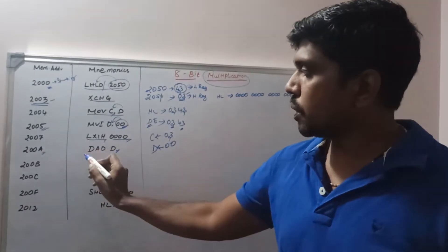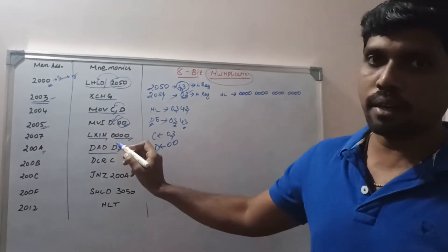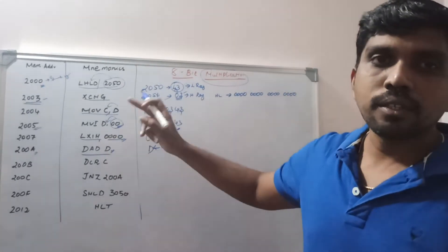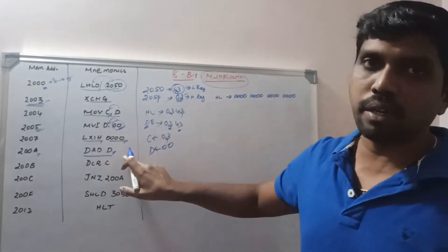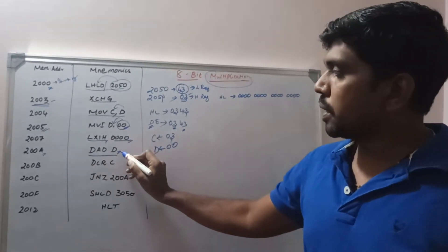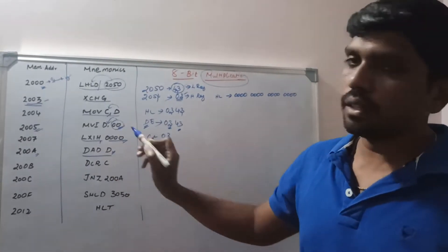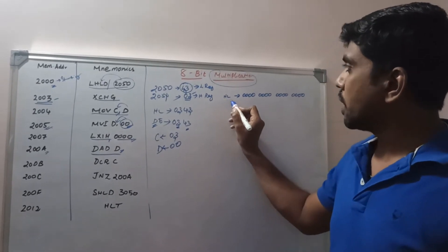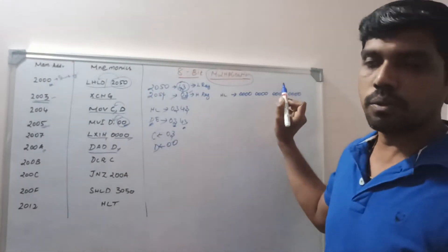At memory location 2008H, you write the instruction DAD, which stands for double addition. This adds two 16-bit values: the DE register pair value is added with the HL register pair value. The HL value was already cleared to 0000H, and D value is 00 while E value is 43H. In binary, 43H is 01000011. Adding these two 16-bit values gives the result of the first iteration.